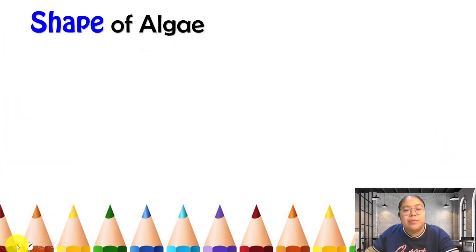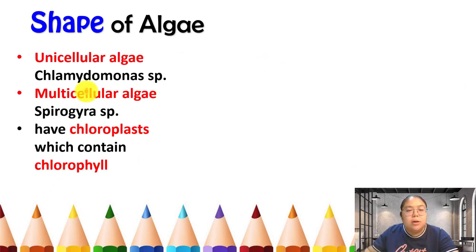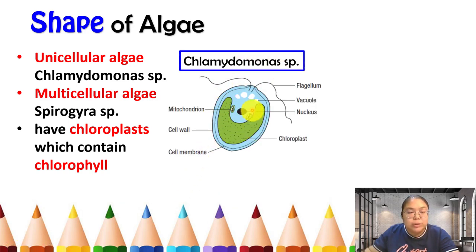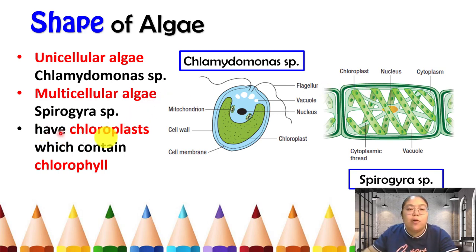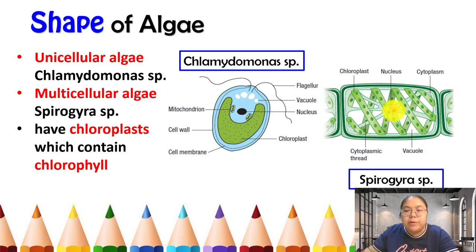Now the shape of algae. Same as before, we have unicellular and multi-cellular types. Unicellular algae include Chlamydomonas. Multi-cellular algae include Spirogyra — a spiral-shaped, continuous green strand like a green belt. Both have chloroplasts, and inside the chloroplasts they have chlorophyll, which gives them their green color. Here is the structure of Chlamydomonas and the structure of Spirogyra species.